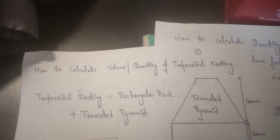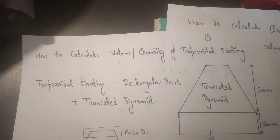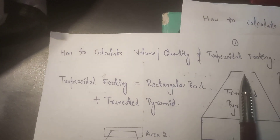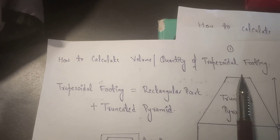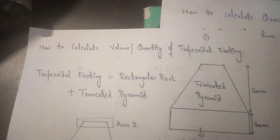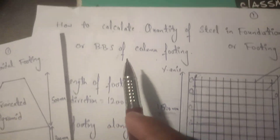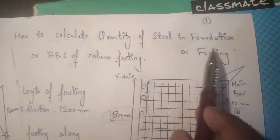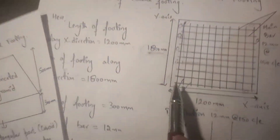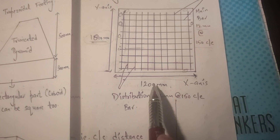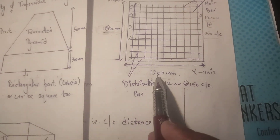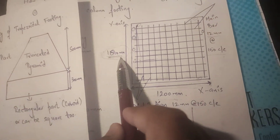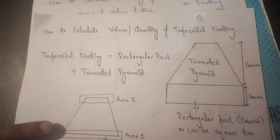Hello friends, today my topic is about how to calculate volume or quantity of trapezoidal footing. In the previous video I discussed how to calculate quantity of steel in a foundation footing — that was an example of a simple isolated footing of 200mm by 800mm.